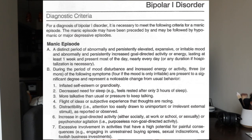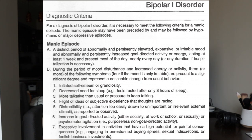Manic episode Criterion A: a distinct period of abnormally and persistently elevated, expansive, or irritable mood and abnormally and persistently increased goal-directed activity or energy, lasting at least one week and present most of the day, nearly every day — or any duration if hospitalization is necessary. During the period of mood disturbance and increased energy or activity, three or more of the following symptoms (four if the mood is only irritable) are present to a significant degree. Symptom one: inflated self-esteem or grandiosity. Symptom two: decreased need for sleep — for example, someone feels rested after only three hours of sleep, which is not their normal sleep cycle.